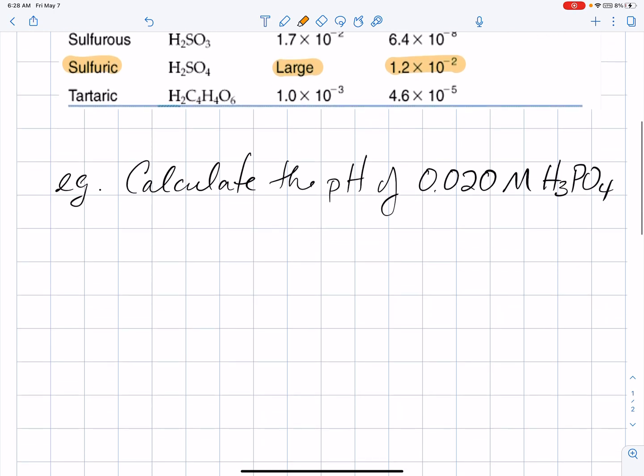An example, let's calculate the pH of 0.020 molar phosphoric acid, H3PO4. The first step is very similar to what we would do in any other weak acid question. So, if you know what you're doing, pause the video and try to set the first step up.